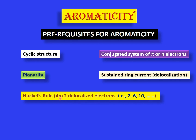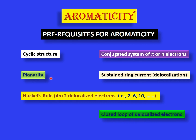If n = 3, then 4(3) + 2 = 14. So if a cyclic system has a conjugated system of pi or non-bonding electrons that are delocalized, and those delocalized electrons are 2, 6, or 10 in number, and in addition that ring is also planar, then we can say the molecule may be aromatic. Furthermore, these delocalized electrons must form a closed loop within that ring or cyclic structure.